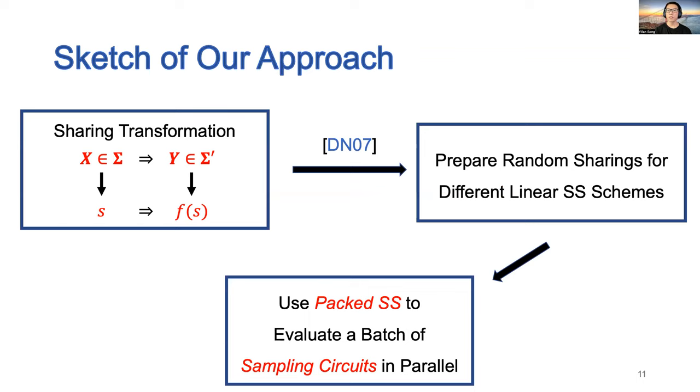To achieve our results, we first reduce the problem to preparing random sharings for different linear secret sharing schemes. Then, we view the sampling process of each secret sharing scheme as a linear circuit, and we use packed secret sharing to evaluate a batch of sampling circuits in parallel.